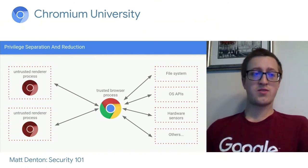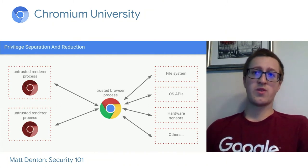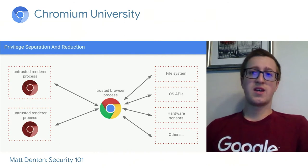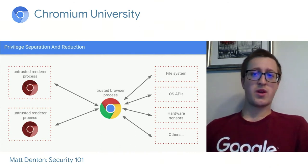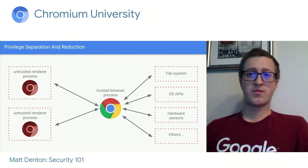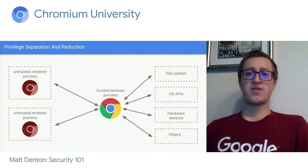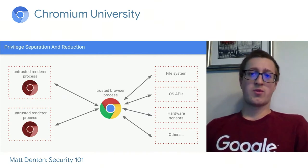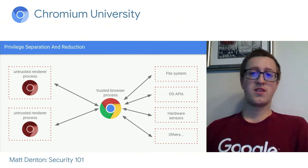How do we ensure the untrusted renderer process can't access those resources? We use OS APIs to lower the privilege level of these processes and prevent them from doing things like installing software, reading arbitrary files, making arbitrary network requests, or accessing your location. This technique is called privilege reduction or sandboxing. A bug that allows malicious web content to run native code in a renderer will have less direct power to access resources outside the sandbox — that would require the attacker to exploit a completely separate bug, which is a big deal.